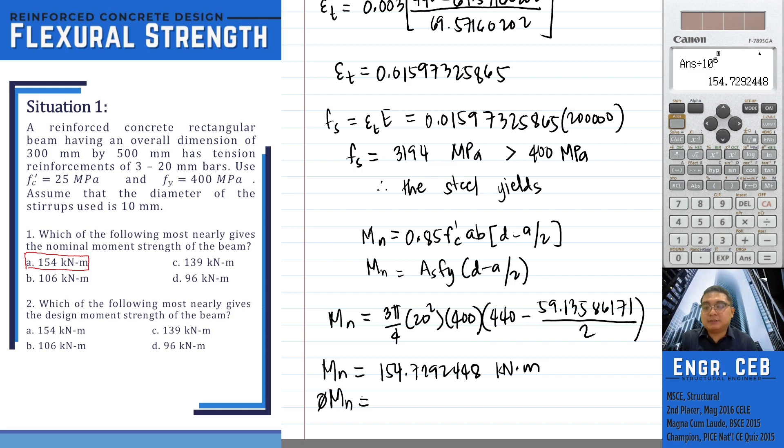Later on we will discuss the complete evaluation of the resistance factor. But in this case, since the net tensile strain is greater than 0.005, the corresponding value of phi is always 0.9. So we have 0.9 times 154.7292448, which equals 139.2563203. So this is now our design moment strength and that is letter C.